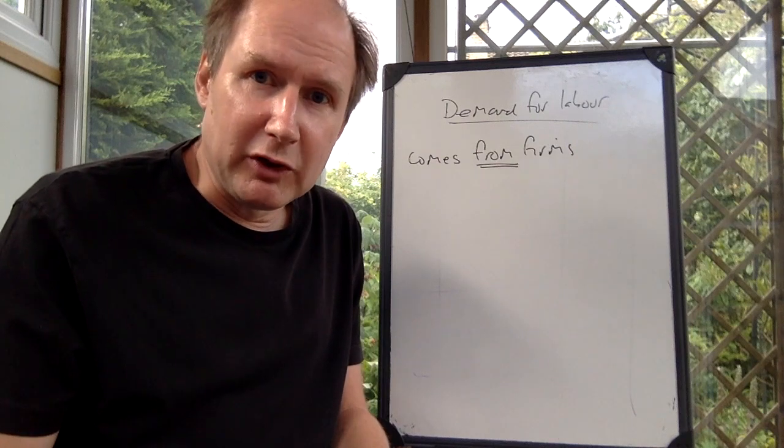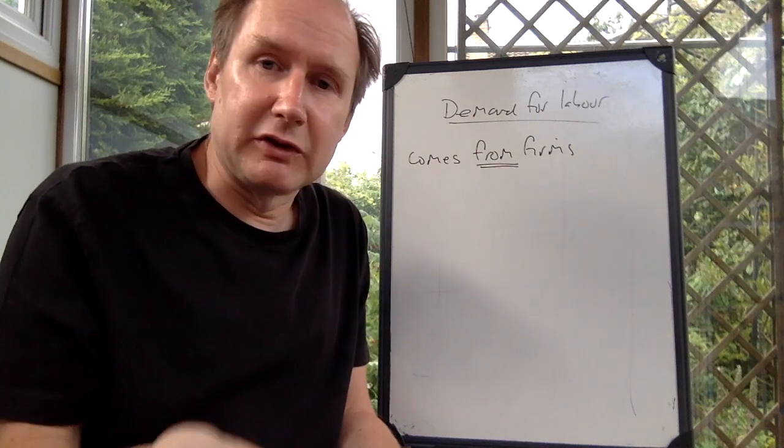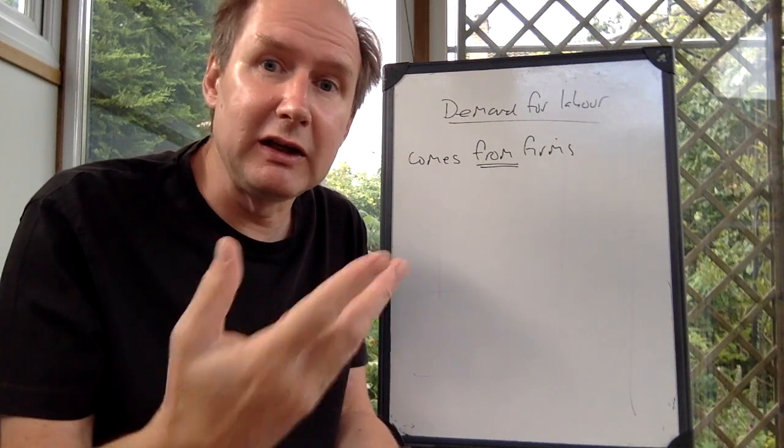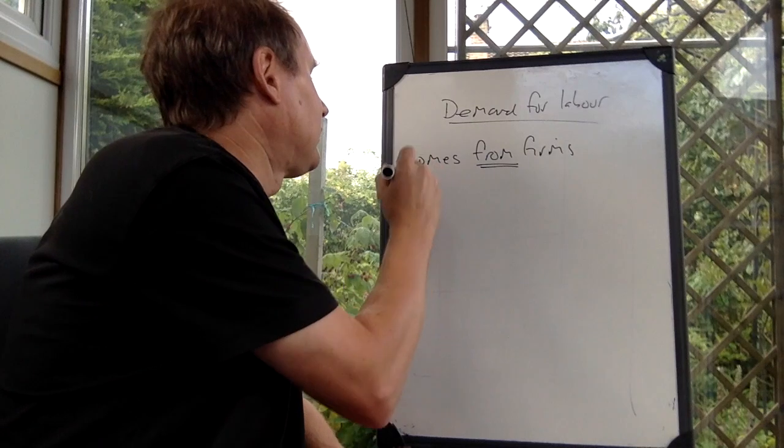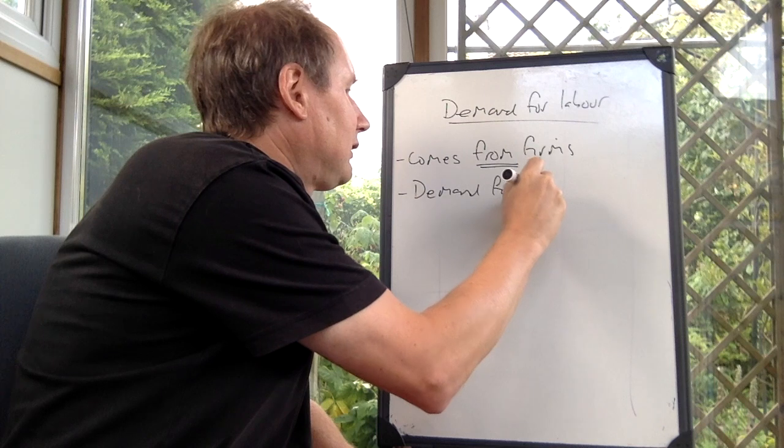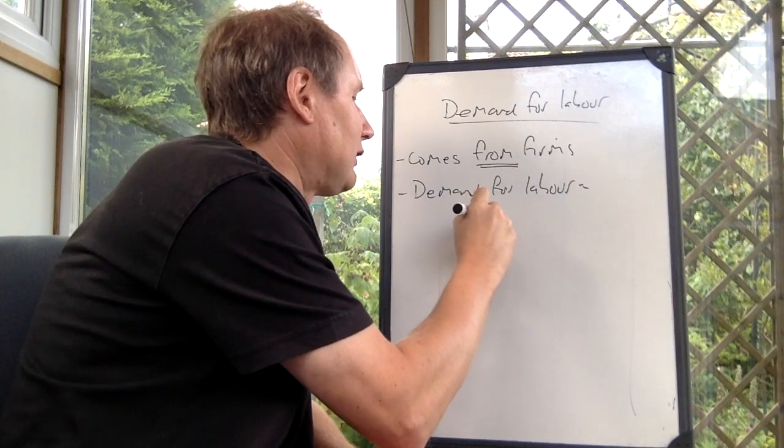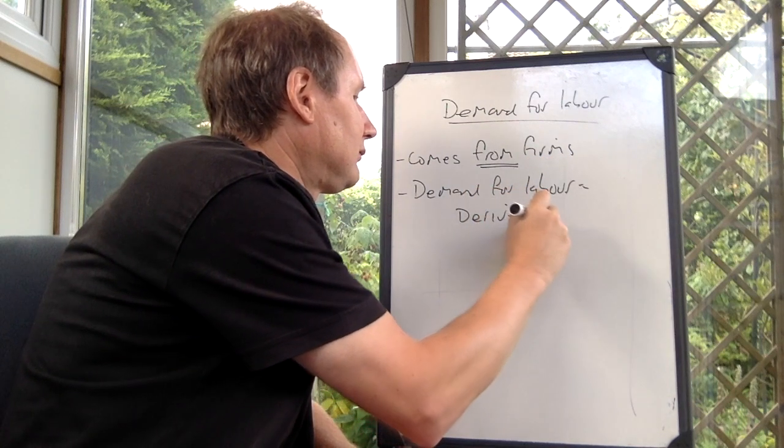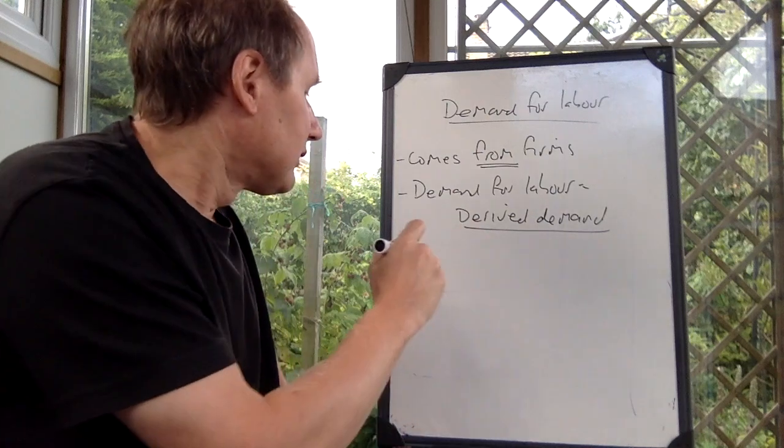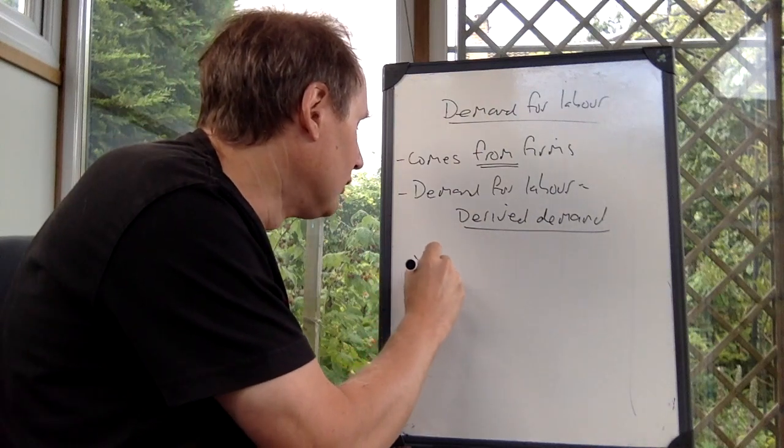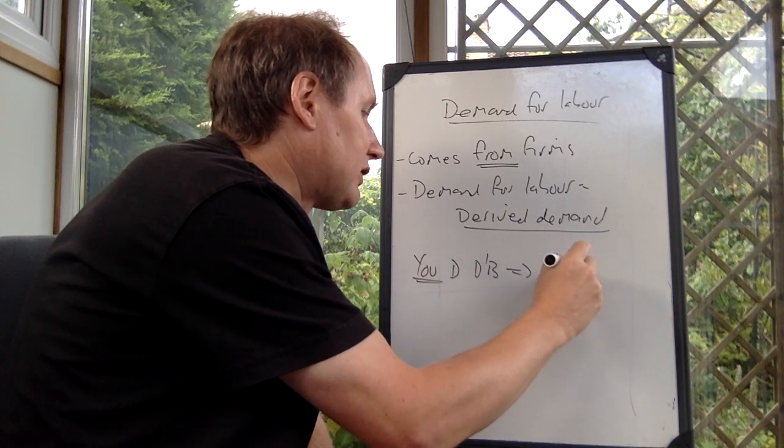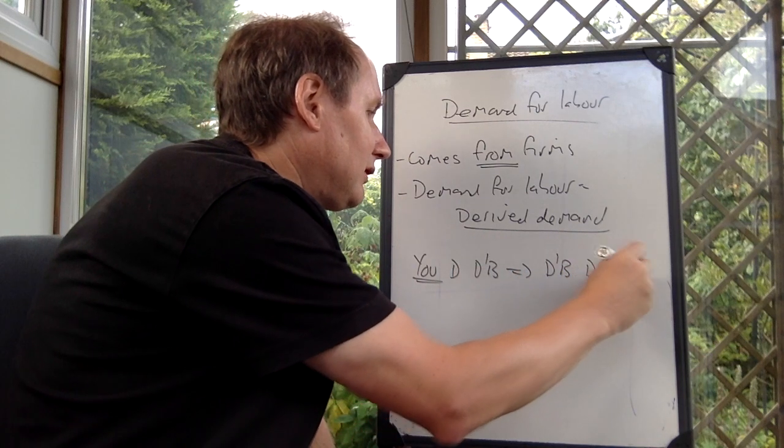Why is it that firms need workers? They need workers to produce goods and services. In my case, the reason that Doverbrooks need me is that you're at Doverbrooks. What we can say is that the demand for labour is what we call a derived demand. What derived demand means is that it comes from something else. You, as students, demand Doverbrooks, as a result of which Doverbrooks demands me.